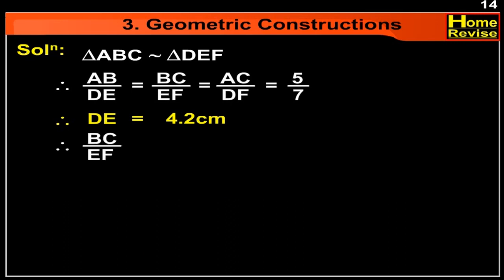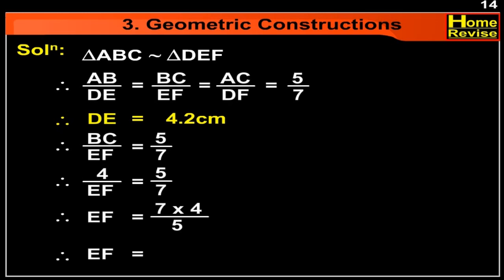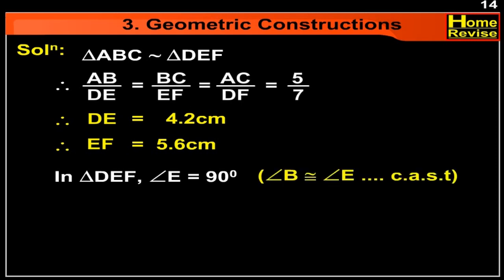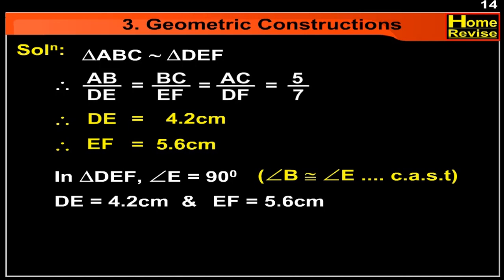Similarly, BC upon EF is equal to 5 upon 7. Putting the value of BC, we get 4 upon EF is equal to 5 upon 7. Therefore, EF is equal to 28 upon 5, which equals 5.6 cm. Now in triangle DEF, angle E is equal to 90 degrees, DE is equal to 4.2 cm, and EF is equal to 5.6 cm.